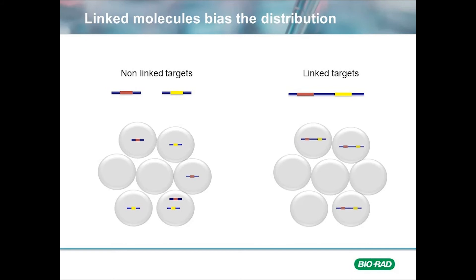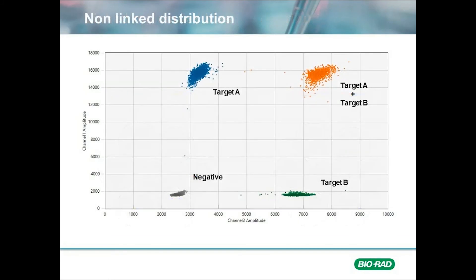On the other hand, if the two targets are linked, they will end up in the same droplet. In this 2D analysis of a non-linked sample, we see a FAM and/or HEX signal in droplets where the targets of interest are present. On the bottom left, we have droplets that neither target of interest landed within. On the top left, we have droplets positive for the first target — let's call it A. On the bottom right, we have droplets positive for target B. And on the top right, we have droplets positive for both targets A and B, as due to random distribution, inevitably there will be some co-localization of our targets of interest.